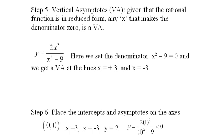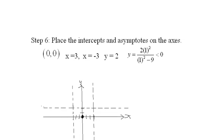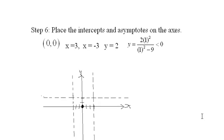Step 6, we place the intercepts and asymptotes on the axes. And here they are. And we're ready to think about graphing this.